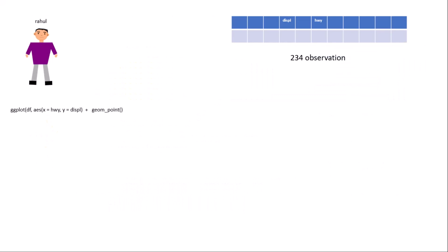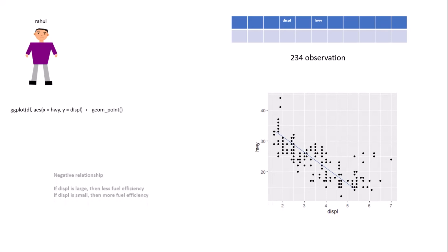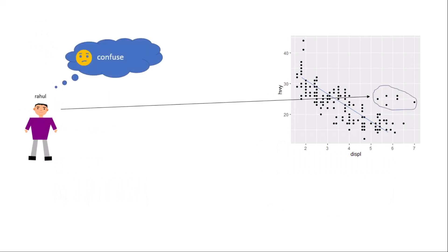When you run the basic ggplot2 scatter plot command, it looks like this. As you can see, there is a negative relationship between engine size and fuel efficiency: if the engine size is large, you get very less fuel efficiency, and if the engine size is small, you get more fuel efficiency. This is very expected and obvious. But after some time, Rahul is confused by certain points on the graph — points that show a car with a large engine but also high fuel efficiency.